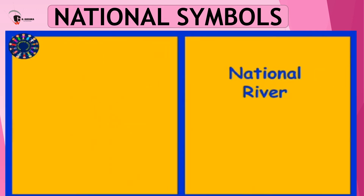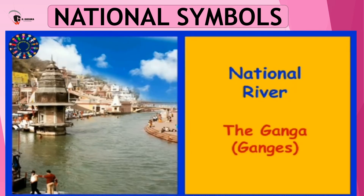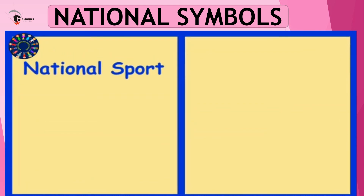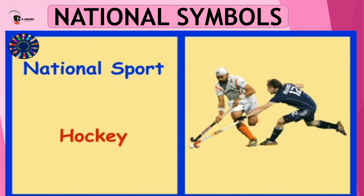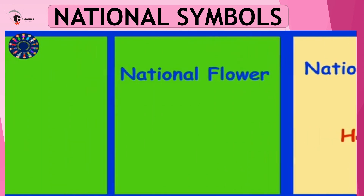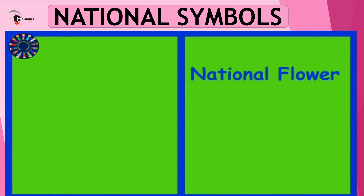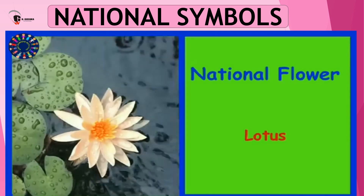Which is our national river? Our national river is the Ganga, also known as the Ganges. What is our national sport? Our national sport is Hockey. Which is our national flower? Our national flower is the Lotus.